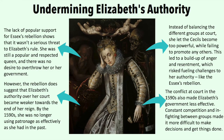Lack of popular support for Essex's Rebellion showed that it wasn't a serious threat to Elizabeth's rule. She was still a popular and respected Queen, and the people had no desire to overthrow her or her government. However, the rebellion does suggest that Elizabeth's authority over her court became weaker towards the end of her reign. By the 1590s, she was no longer using patronage as effectively as she had in the past. Instead of balancing the different groups at court, she let the Cecils become too powerful while failing to promote many others. This led to a build-up of anger and resentment which risked fuelling challenges to her authority, like the Essex revolt. This conflict in court also made Elizabeth's government less effective, as constant competition and infighting between groups made it more difficult to make decisions and get things done.